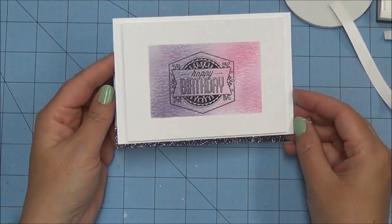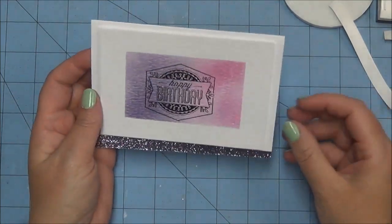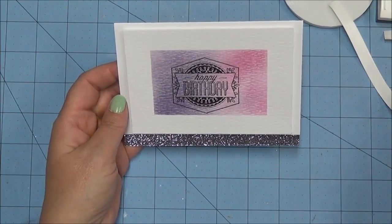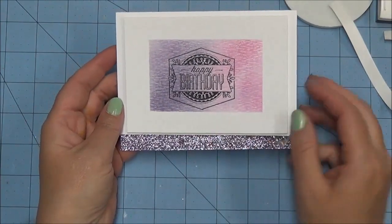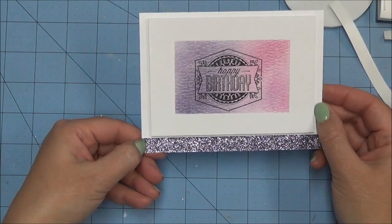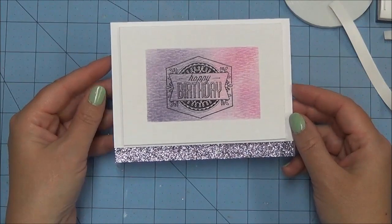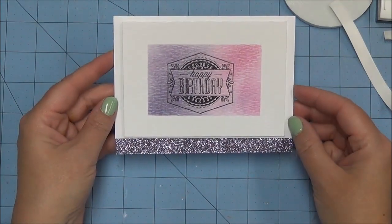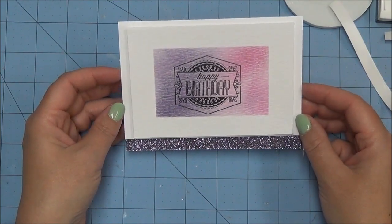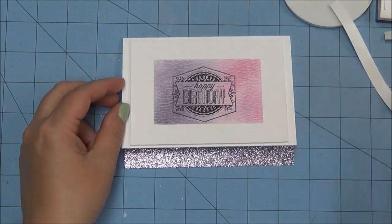We're just going to eyeball it, line it up, press it down, and there we have a super simple card. If I wanted to I could have gone just a little bit smaller and put another border of paper around it, but I didn't want to detract from my sparkle. See how well our purple sparkle paper goes with the Dusty Concord ink? It's a great match. There we have a really simple card that I'll have in my stash for a friend at some point. Thanks so much for stopping by today and remember, take some time to enjoy the little things. Have a great day, bye!